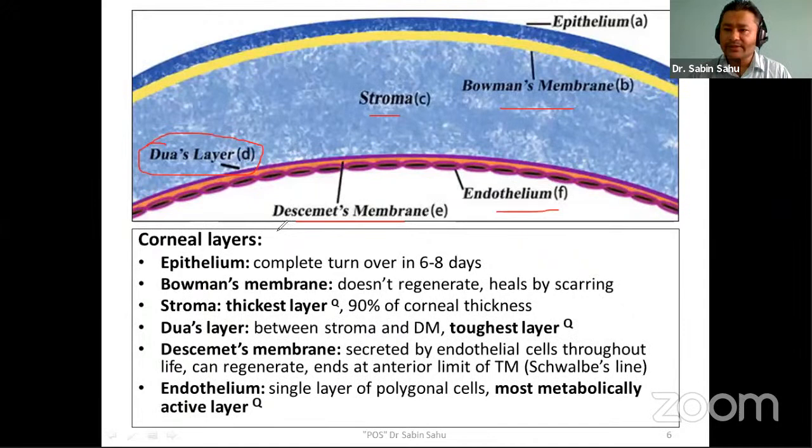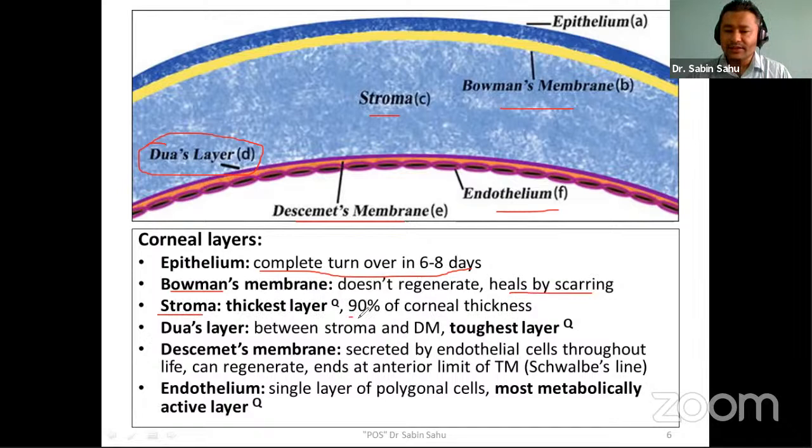The epithelium is the outermost layer, consisting of four to five epithelial layers. Cells have a complete turnover in around six to eight days. The Bowman layer does not regenerate and heals by scarring. The stroma is the thickest layer of the cornea, covering around 90% of total corneal thickness.